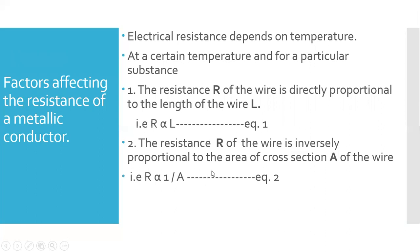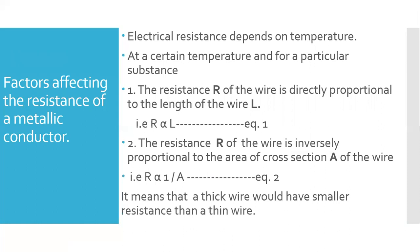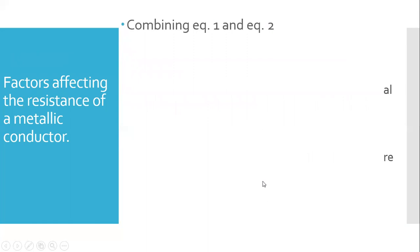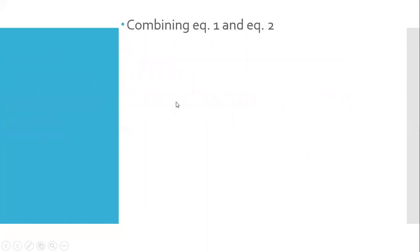Combining the two equations, R is directly proportional to L upon A — meaning a thick wire has smaller resistance than a thin wire. Removing the sign of proportionality, R equals ρL upon A, where ρ is the constant of proportionality.